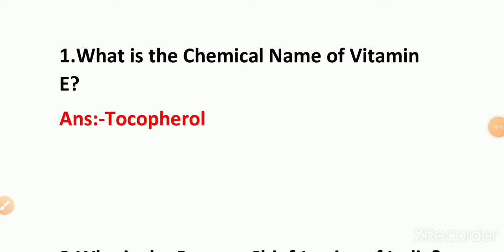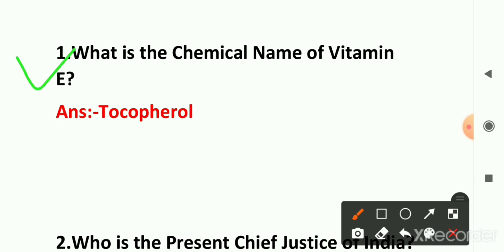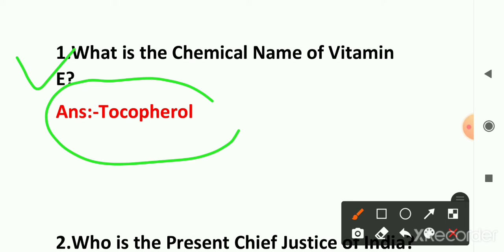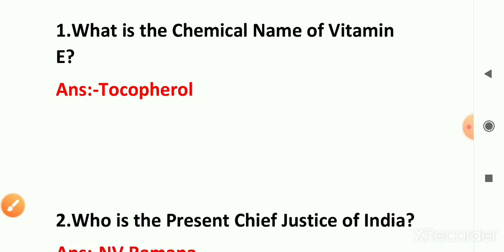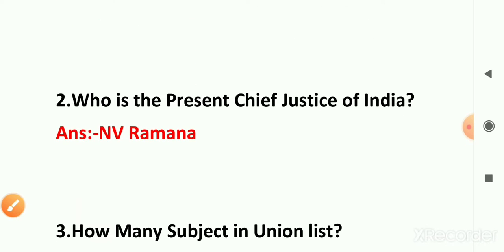First question: one question came for the chemical formula of Vitamin E. What is the chemical formula of Vitamin E? The answer is tocopherol. Tocopherol is the right answer in your option.